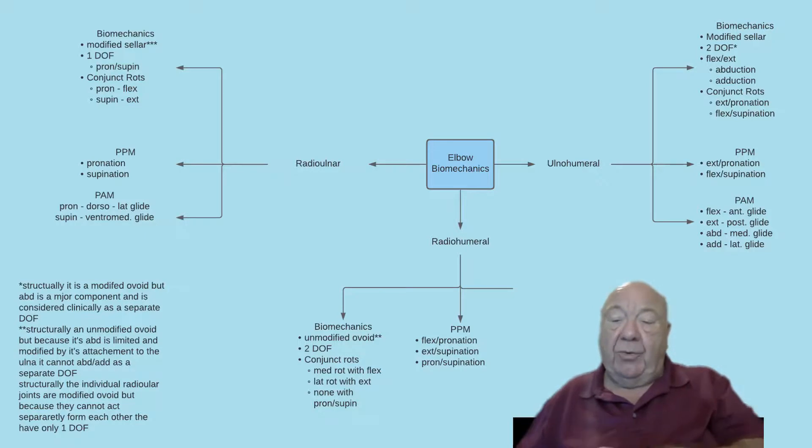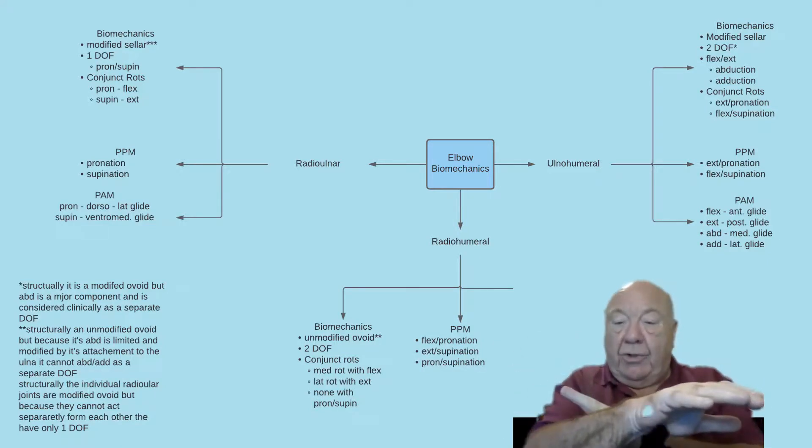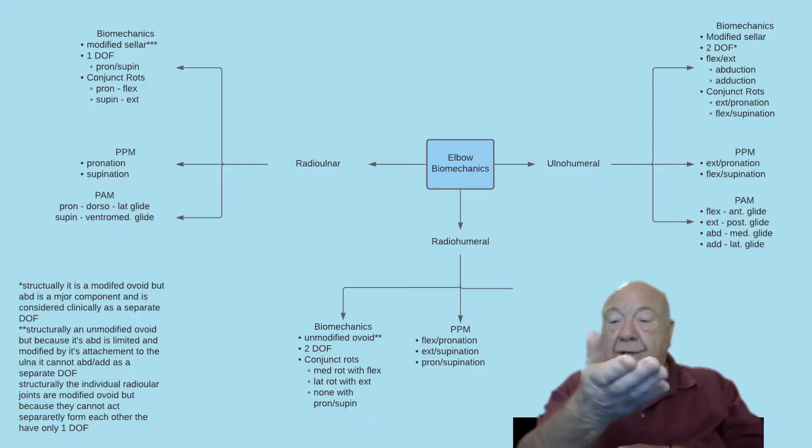So that with pronation, the radius moves ventromedially, so the glide must be dorsolateral. For supination, it's a dorsolateral osteokinematic, so it must be a ventromedial glide of the radius there.